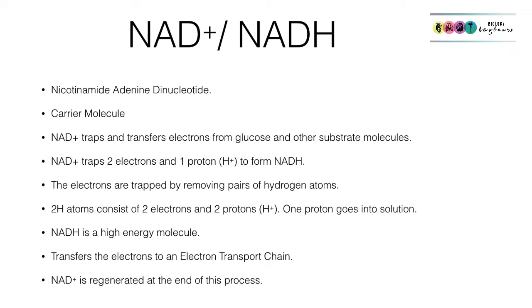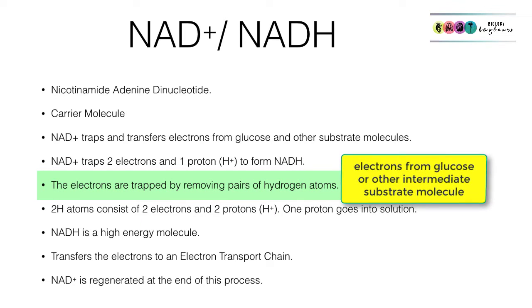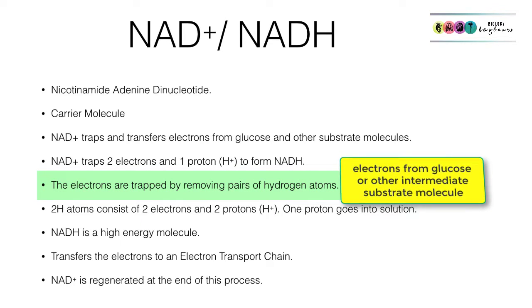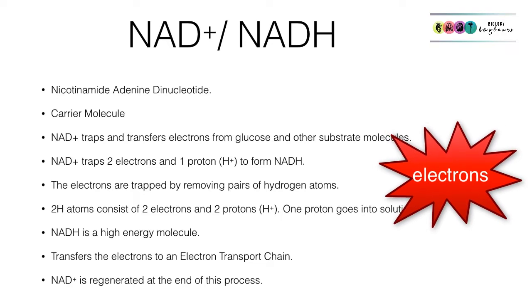NAD+ will trap two electrons and one proton to form NADH. The electrons are trapped by removing pairs of hydrogen atoms from glucose or other substrate molecules. It's the electrons in those hydrogen atoms that we're interested in — they bring the electrons from the glucose or substrate molecule and trap them in NADH.